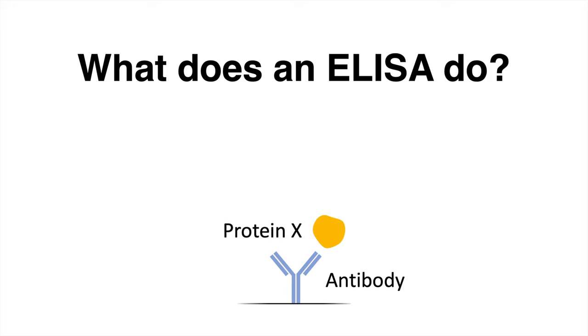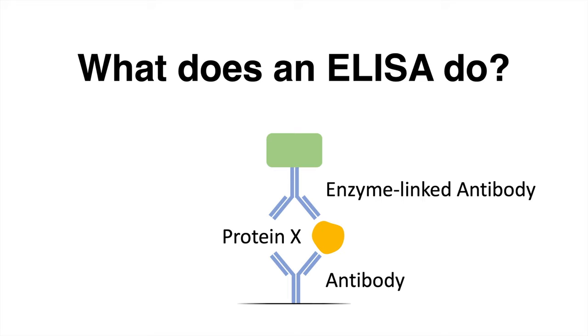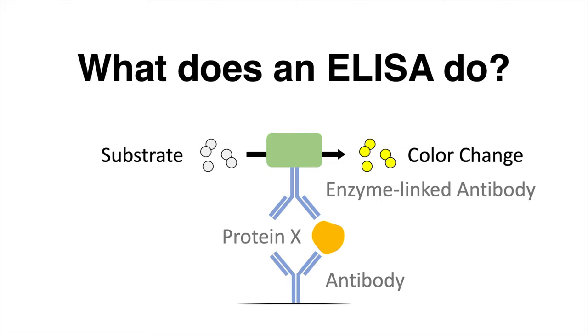Another soluble antibody is provided. The antibody is also specifically covering protein X. This antibody is conjugated to an enzyme. When we add a substrate, the enzyme can convert it to a colorful product, which can be measured later.